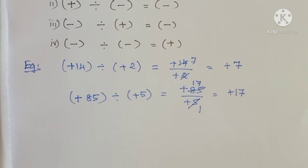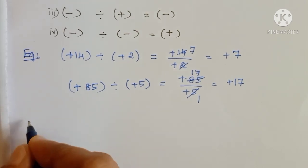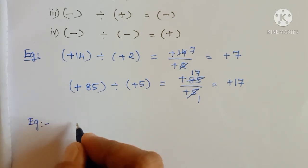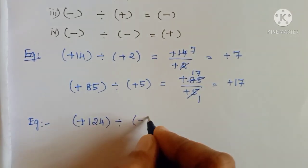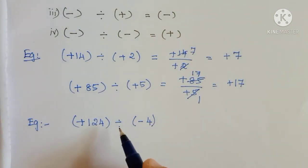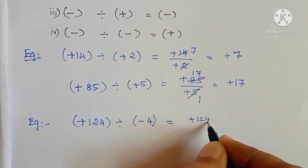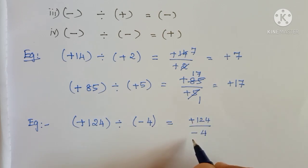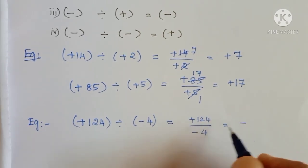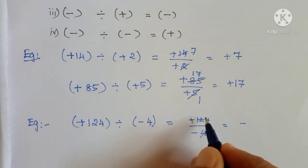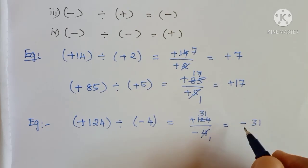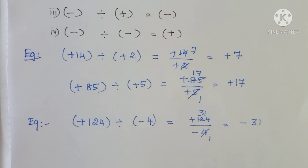Next example — a positive integer divided by a negative integer. Plus 124 divided by minus 4. Here, one number is plus, one number is minus. So, first you see the sign: plus by minus. Whenever you are using the division of integers concept, first we have to see the sign only. Plus divided by minus — we can write here minus. Then you see the numbers: 124 and 4 can be cancelled by 4 table. 4 one time, 4 three times — so the answer is minus 31.